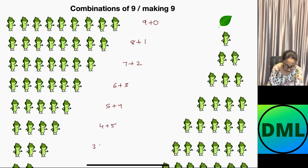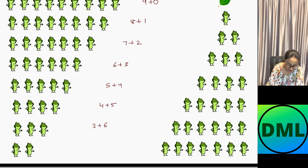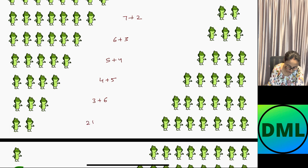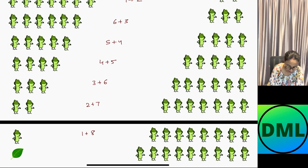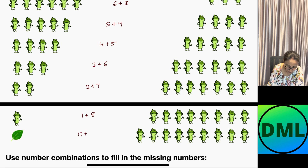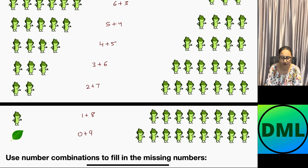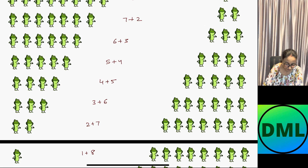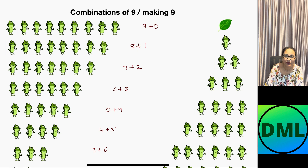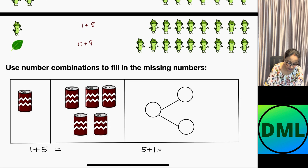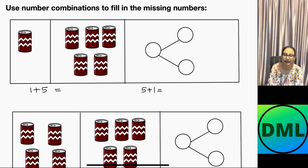Next combination is 3 plus 6, then 2 plus 7, then 1 plus 8, and finally 0 plus 9. So there are 10 combinations of 9 — 1, 2, 3, 4, 5, 6, 7, 8, 9, 10. There are 10 combinations of 9.